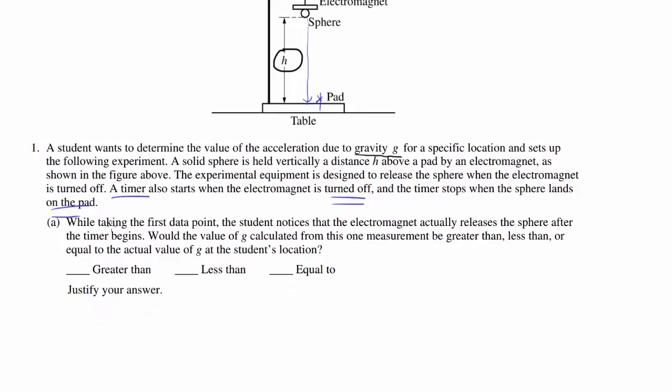While taking the first data point, the student notices that the electromagnet actually releases the sphere after the timer begins. This means that the measured time is going to be longer than the actual time, because the timer is beginning before the sphere is released. We're measuring this extra time between when the timer actually starts and when the electromagnet lets go of the sphere.